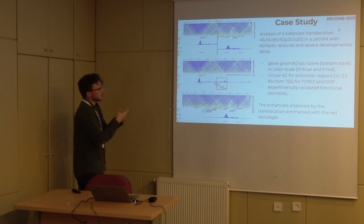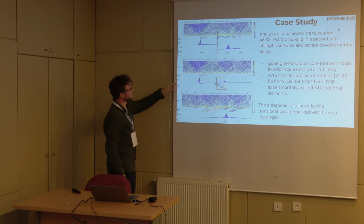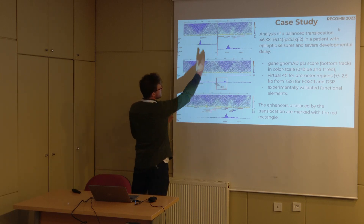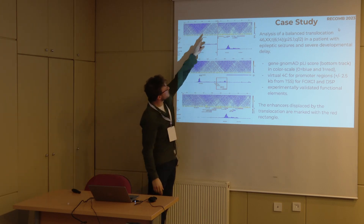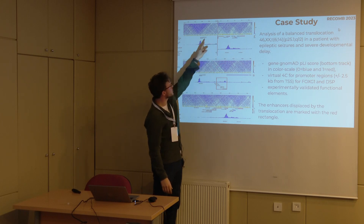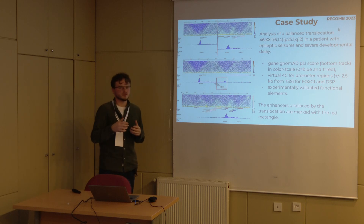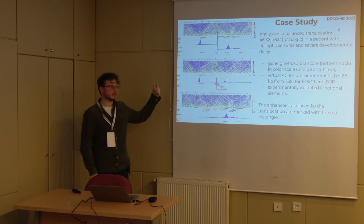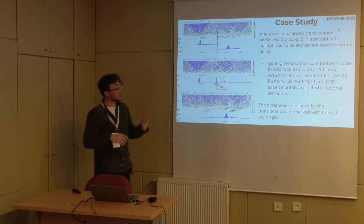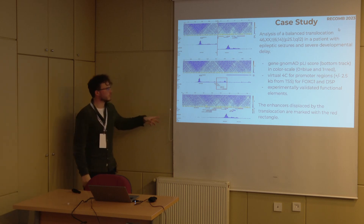We can easily assess which connections exist based on the TADs - those triangles showing contacts - and tell that there is communication between genes and enhancers. We can then identify that these connections were broken, and more importantly, that some artificial connections might have been created as a result of the translocation - a different enhancer communicating with a specific gene. After clinical studies, the clinicians found that TADeus correctly pointed out FOXG1 as an important factor in the etiology of this developmental delay.